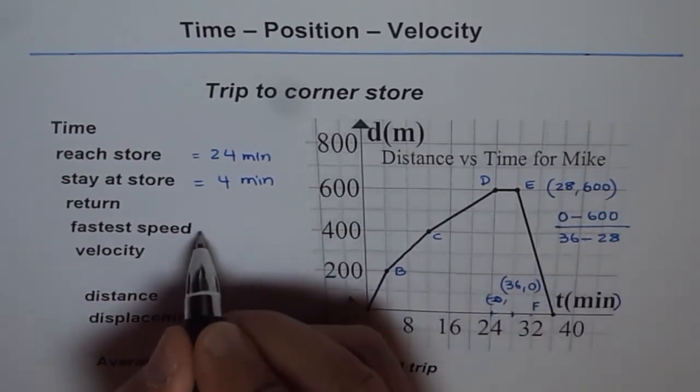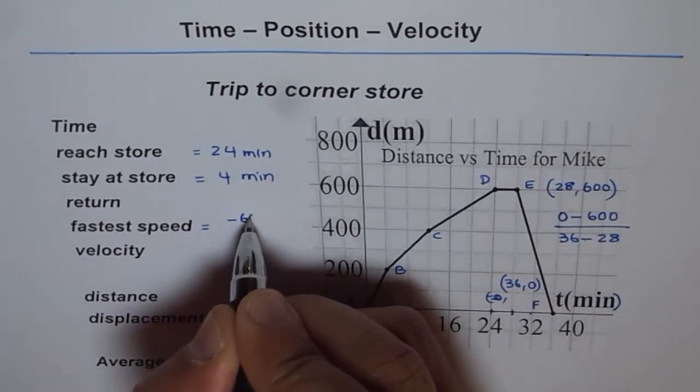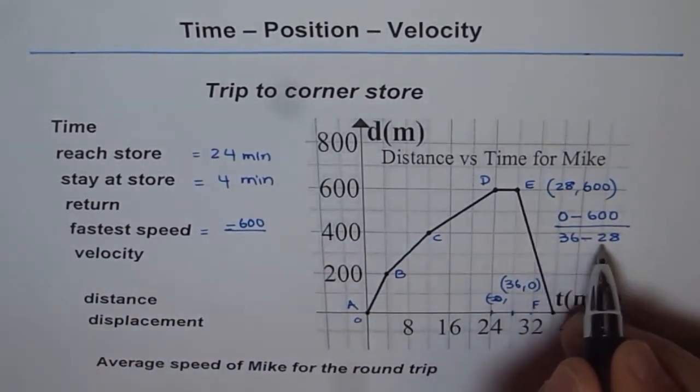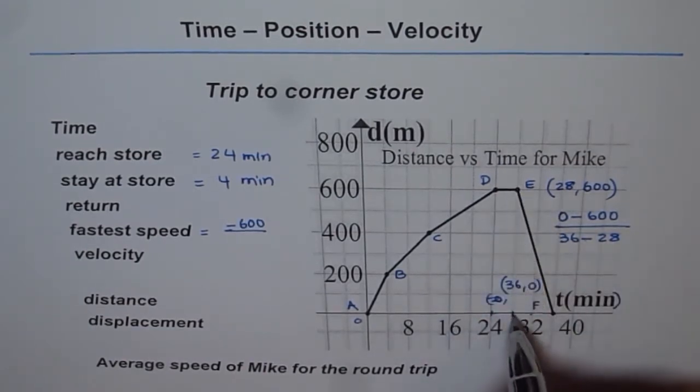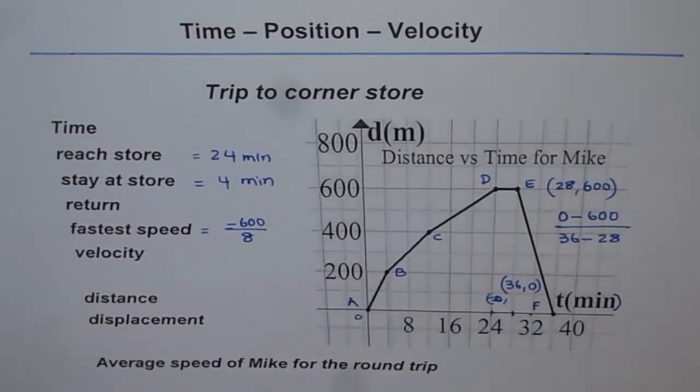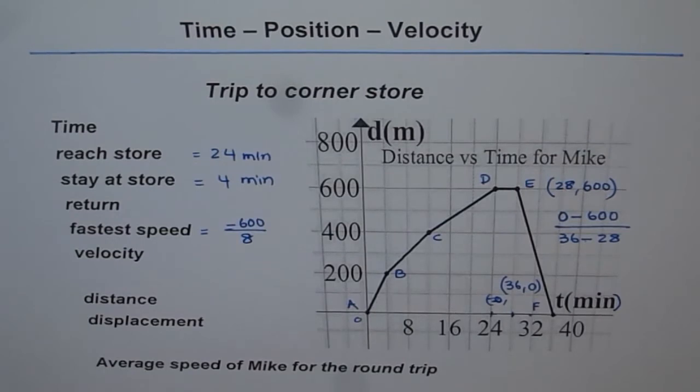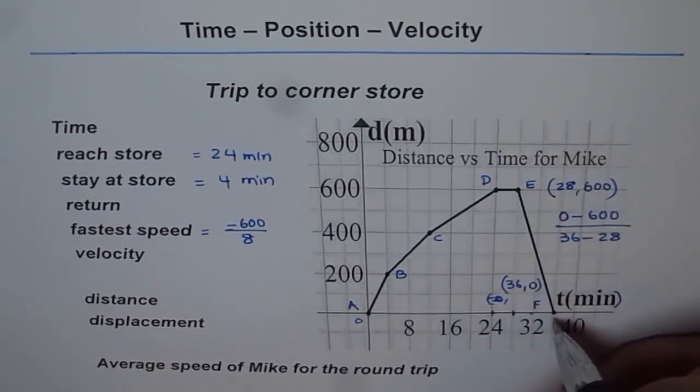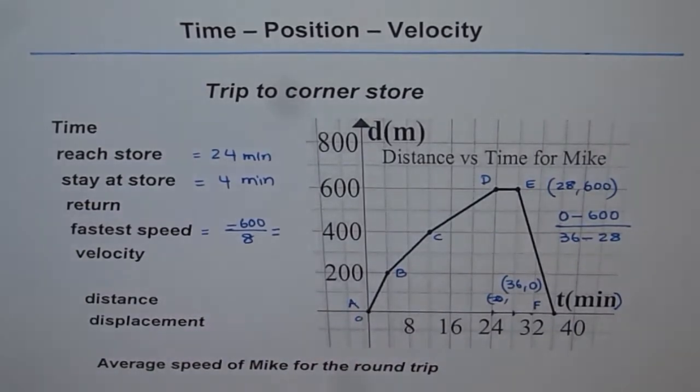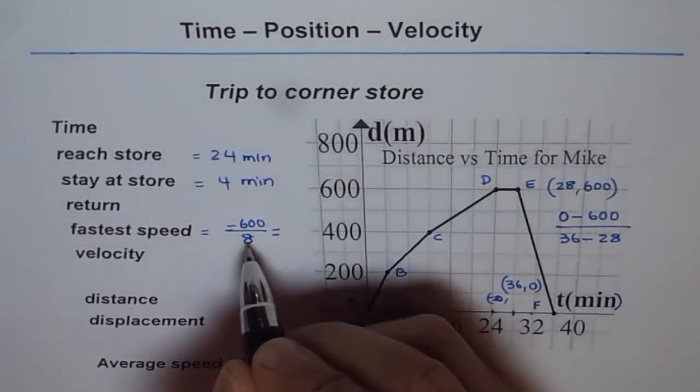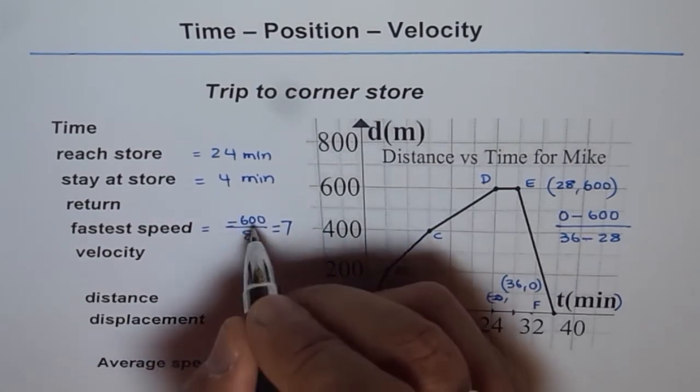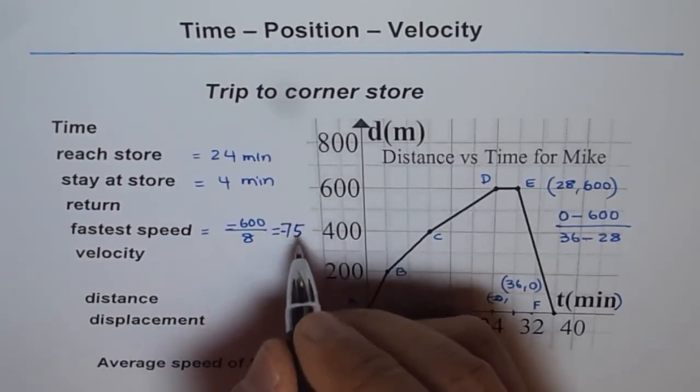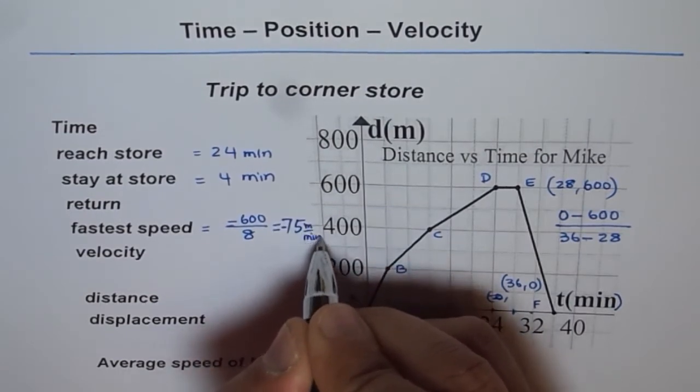So we can say that the speed here is minus 600 divided by 36 minus 28, which is 8. So minus 600 divided by 8 is the speed by which Mike returns home. If you calculate this using a calculator, 8 goes 7 times, 8 times 7 is 56, and then 40 goes 5, so it is 75 but with the negative sign, meters per minute. So that is negative speed.